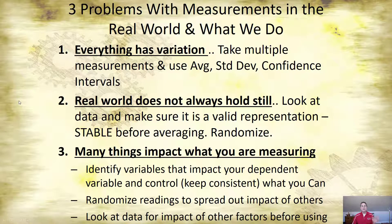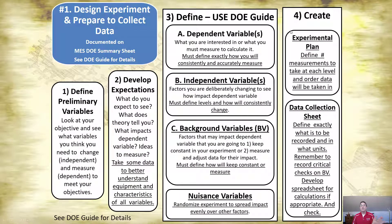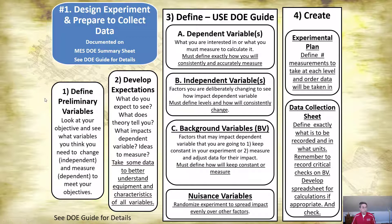So we said three problems: everything's got variation, the real world doesn't hold still, and many things impact what you're measuring. That's why step number one is designing a good experiment — so when you make that decision, you know you accounted for variation, the world not being a nice place, and all the things that could affect your dependent variable. You're sure the results you saw came only from your independent variable. Now let's transition to data from your project.